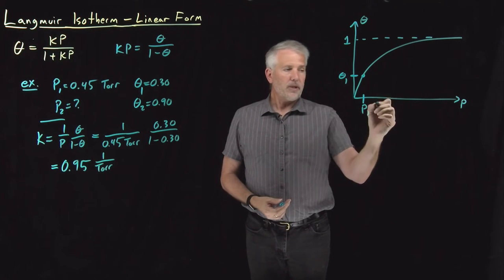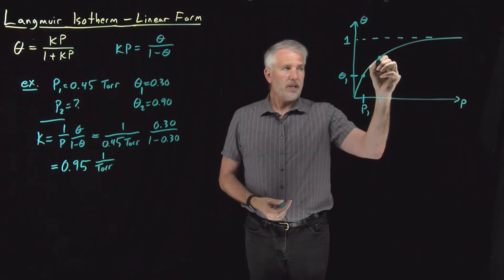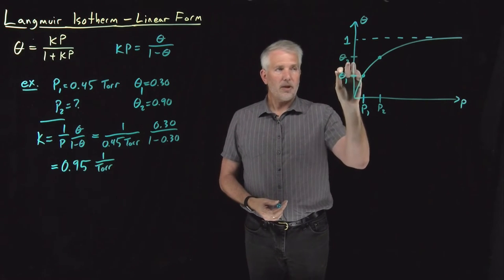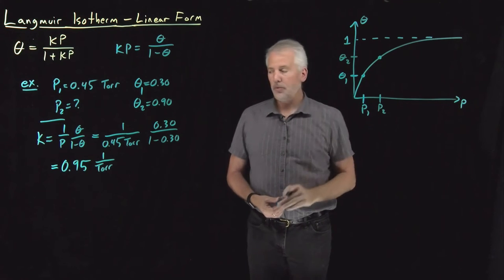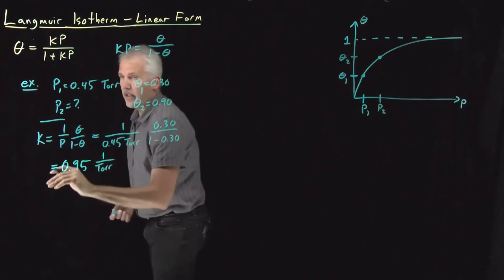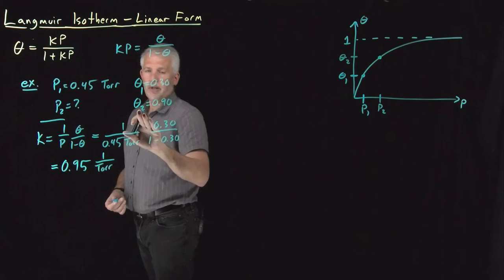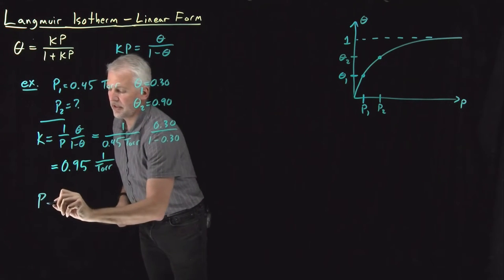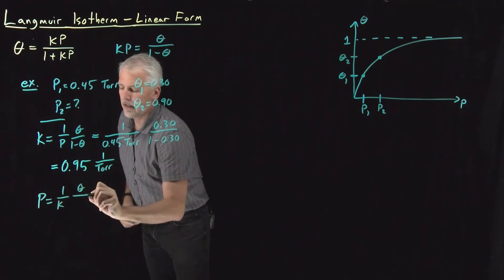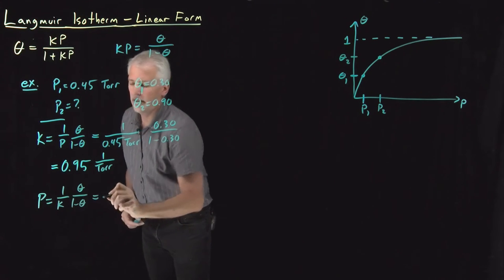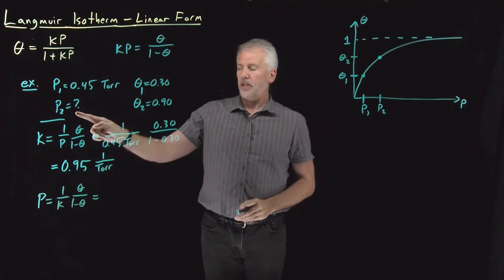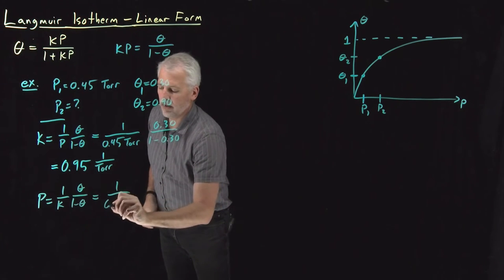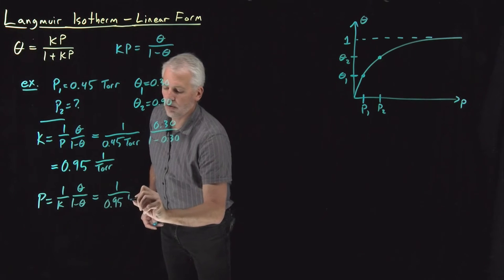So now, if we want to know either what would the surface coverage be at some p2, or equivalently, in order to get some surface coverage, what would p2 be? In this case, we want to know what is p2 when I know theta2. So I'll again use this expression and say pressure is 1 over k, again theta over 1 minus theta. For the conditions I'm interested in, k is still the same, 0.95 inverse torr.